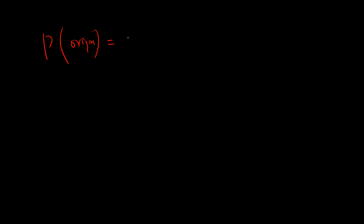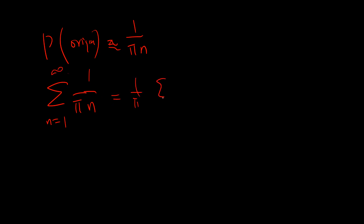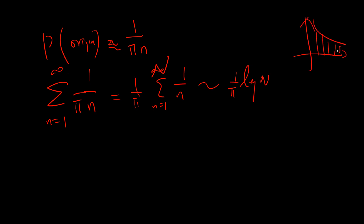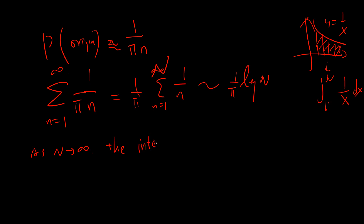So the probability of being at the origin after 2n steps is approximately 1/√(πn). The key step is summing this from n=1 to infinity. This sum diverges — essentially like log n — because the sum approximates the integral of 1/x, which diverges.